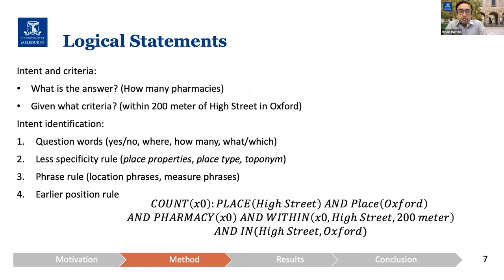After finding the encodings and their relationships, we can express the content of the question as a logical statement that formally captures what is inside the question. The logical statement contains two parts: what is the answer or the intent of the question, and the criteria part. Referring to the example, 'how many pharmacies' is what we want to find out, and the criteria is that those pharmacies should be within 200 meters of High Street.